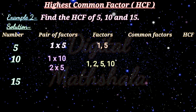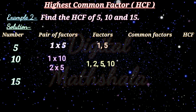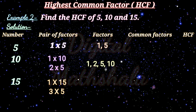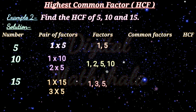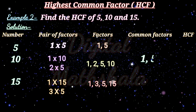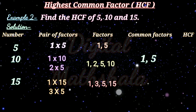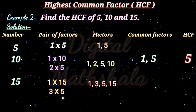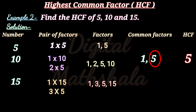The common factors of 5, 10 and 15 are 1 and 5. So the HCF of 5, 10 and 15 is 5, because 5 is the greatest common factor. Did you notice that one particular number is a common factor for all the numbers? Yes, 1 is a common factor of all numbers. Wasn't it easy finding the HCF?